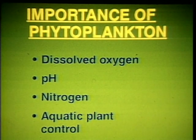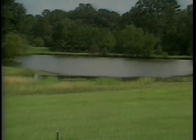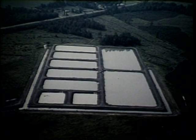Phytoplankton also aids in the prevention of large aquatic plant growth. This is due to the shading effect which is caused by phytoplankton. Shading by phytoplankton prevents sufficient light from reaching larger plants, which in turn inhibits their growth. Dense growth of aquatic plants is undesirable as it inhibits fishing and seining and also can produce increased oxygen demand in the pond. Phytoplankton, like all green plants, utilizes the process of photosynthesis in which carbon dioxide and water are converted to oxygen and carbohydrate by using sunlight as an energy source.